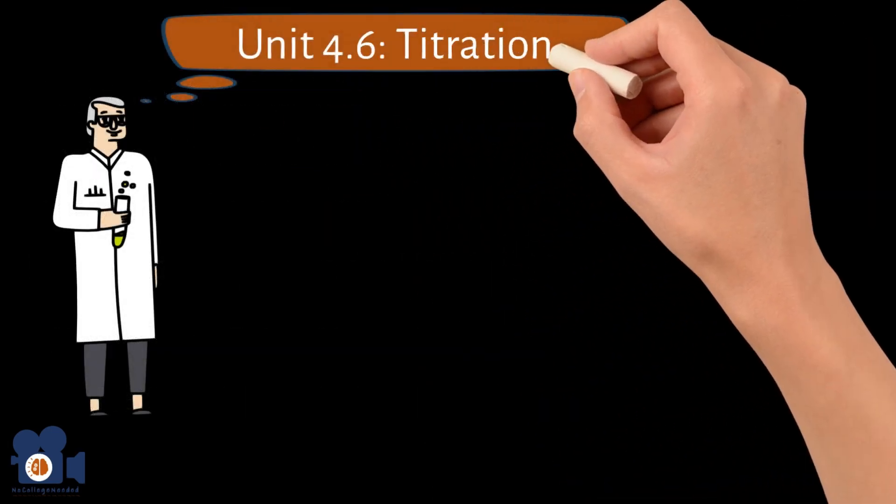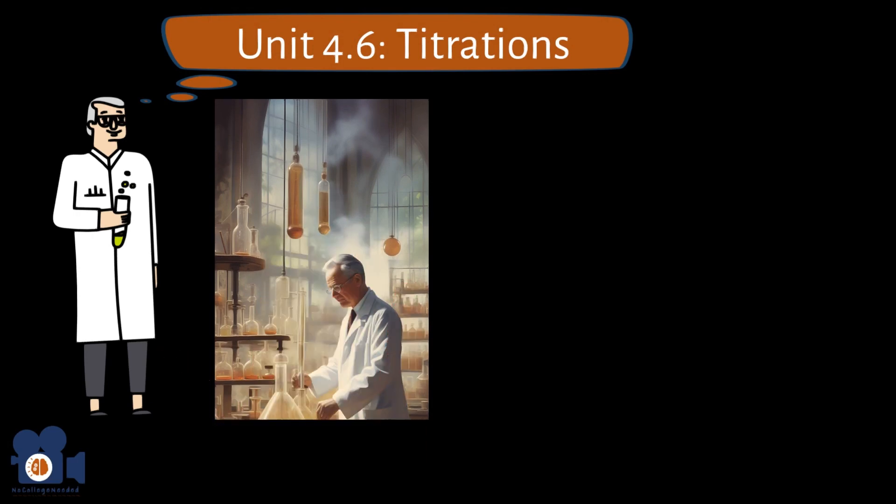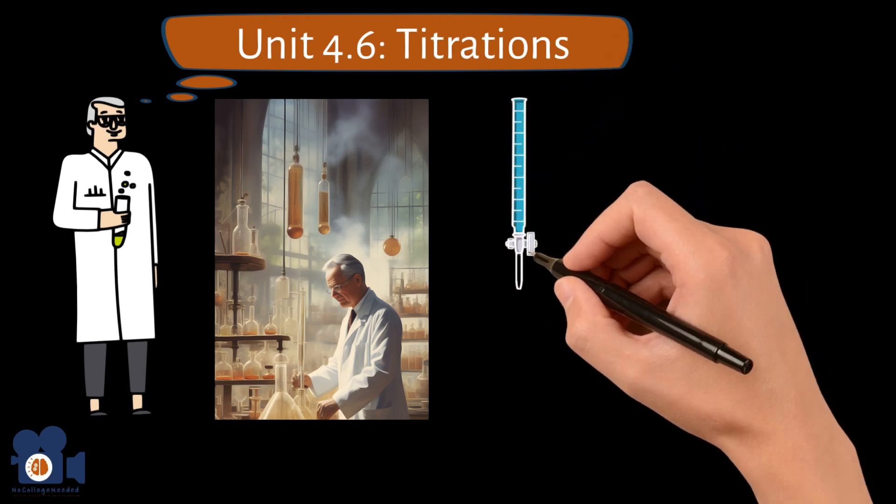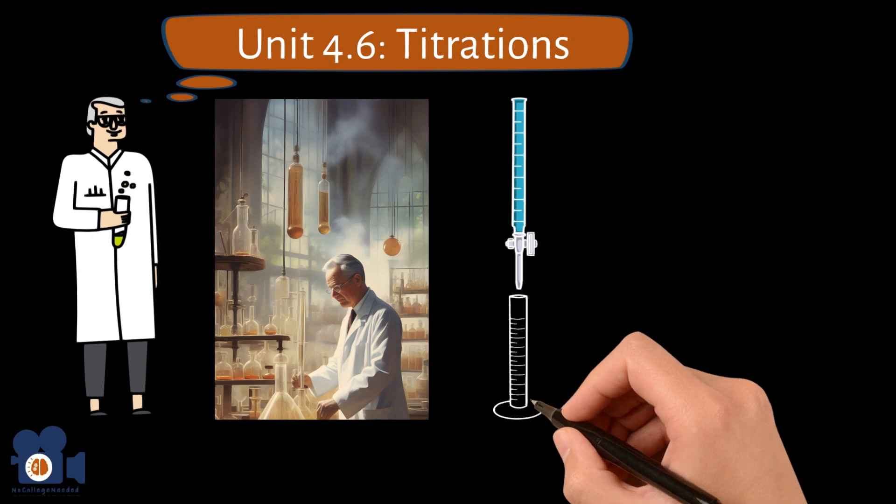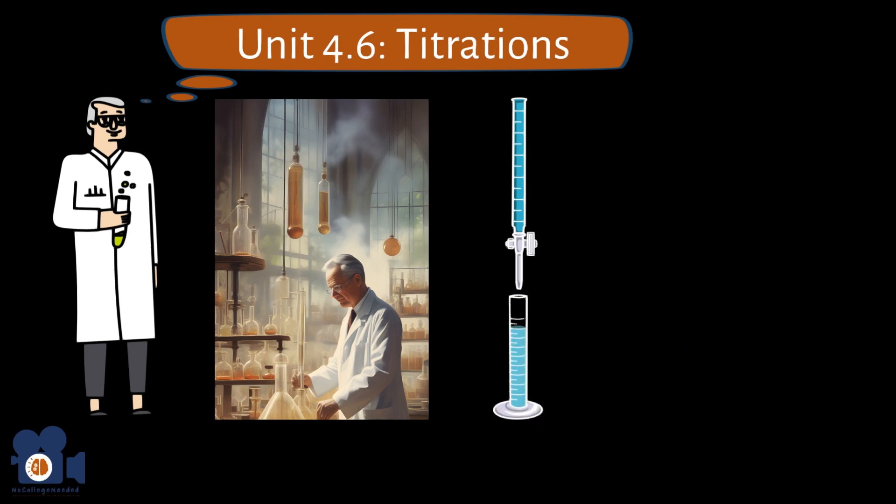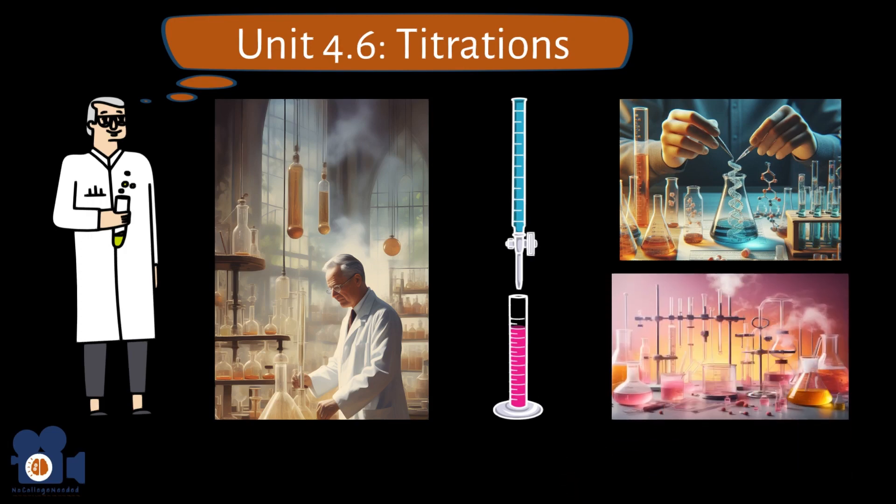For our example, a titration in chemistry is a technique used to determine the unknown concentration of a specific analyte in a solution. The technique involves a slow addition of a known concentration of analyte called a titrant to a known volume of another solution of unknown concentration until the reaction reaches a neutralization point, usually indicated by a color change. The most common type of titration is an acid-base titration. These titrations involve the titration of an acid with a base or vice versa. The neutralization endpoint is often determined using a color pH indicator.